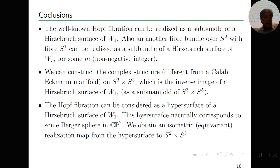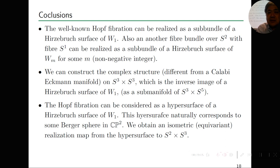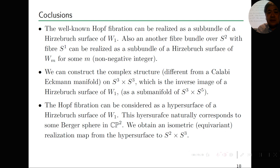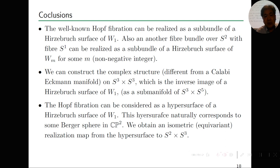In conclusion, summing up this talk: the well-known Hopf fibration can be realized as a sub-bundle of the Hirzebruch surface W1. Also, other fiber bundles — for example, lens spaces — can be realized as sub-bundles of the Hirzebruch surface W_M for some non-negative integer M. Furthermore, we can construct a complex structure on S3 × S3 different from the Calabi-Eckmann manifold, as the inverse image of the Hirzebruch surface W1. The Hopf fibration can be considered as a hypersurface naturally corresponding to a Berger sphere in CP2, giving an isometric realization map from the hypersurface to S2 × S3.